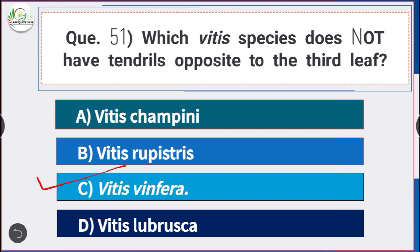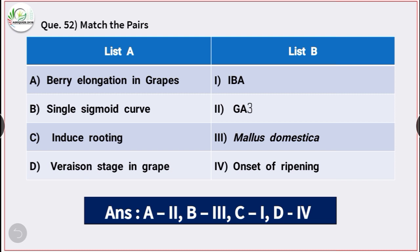Question number 52: Match the following. Berry elongation is caused by GA3. Single sigmoid curve is associated with Malus domestica. IBA induces rooting in plants. Veraison stage in grape occurs at onset of ripening.